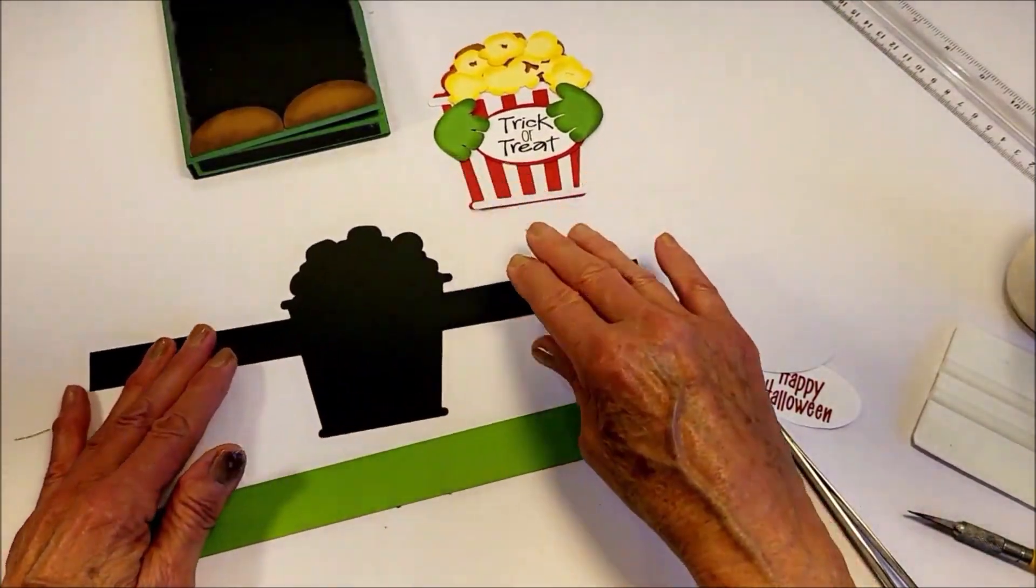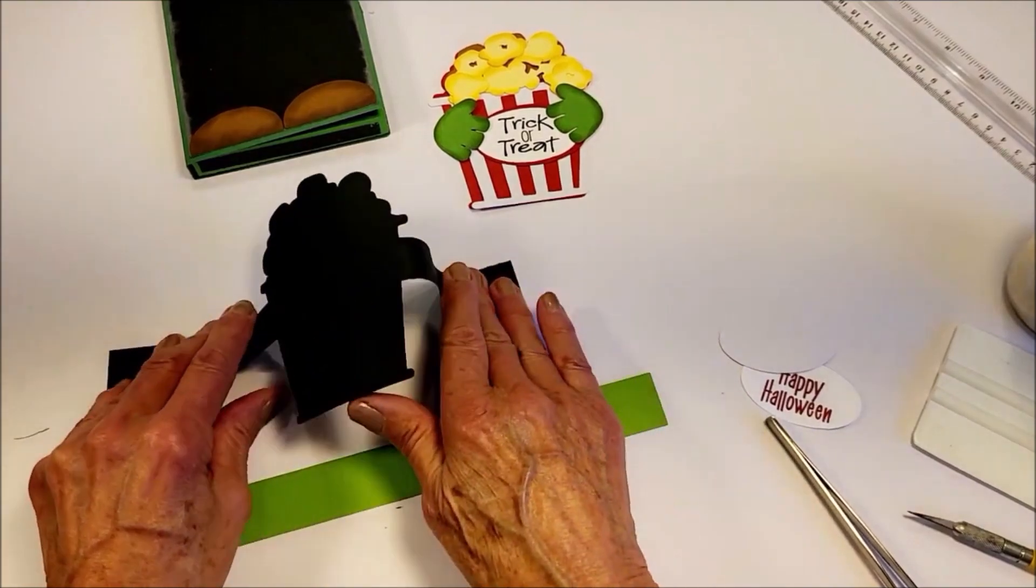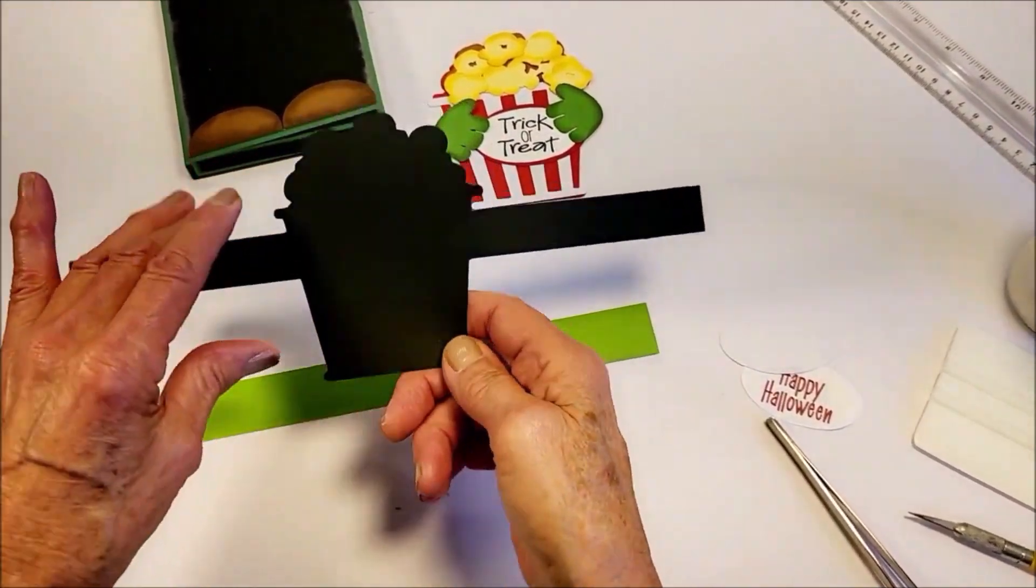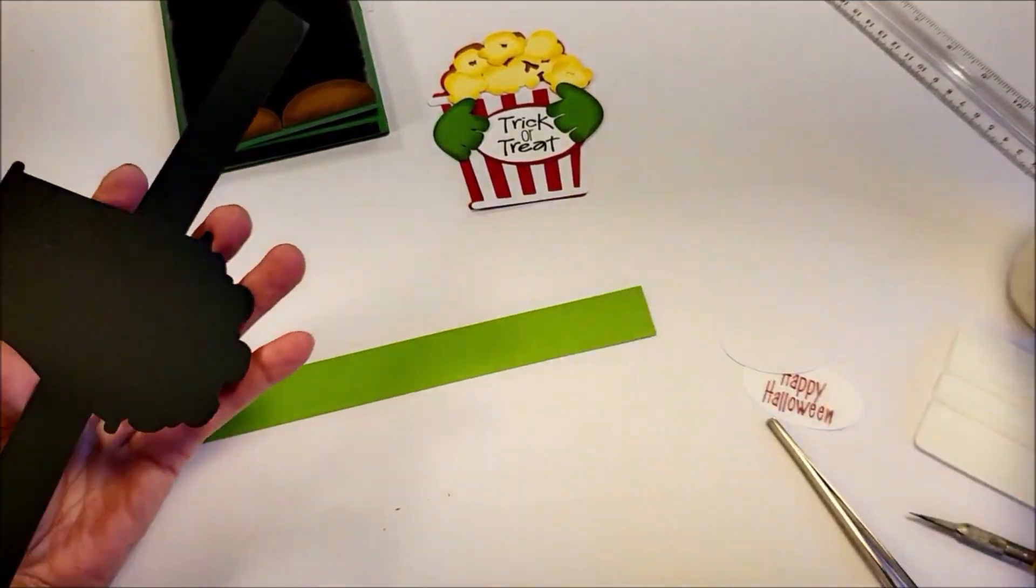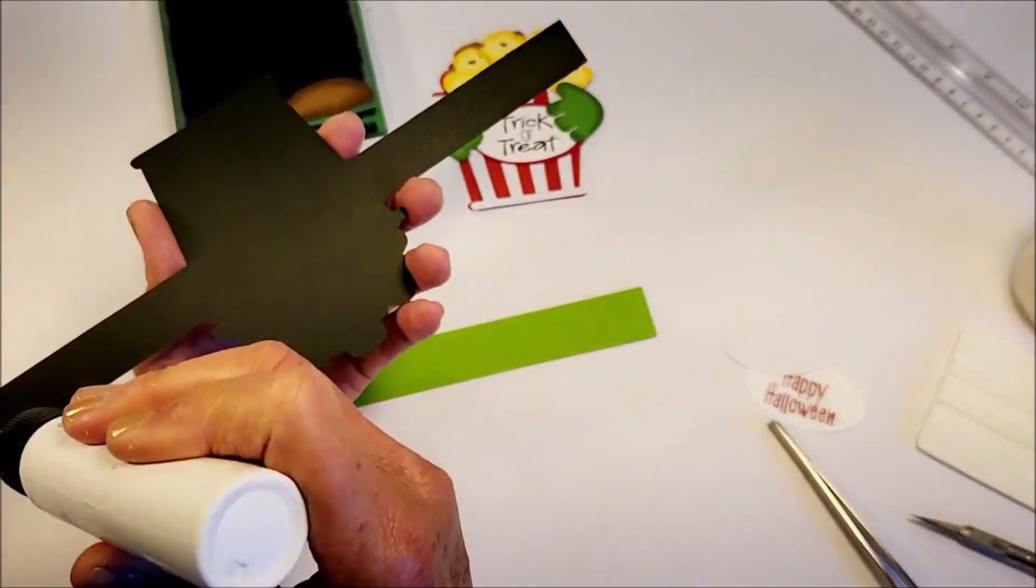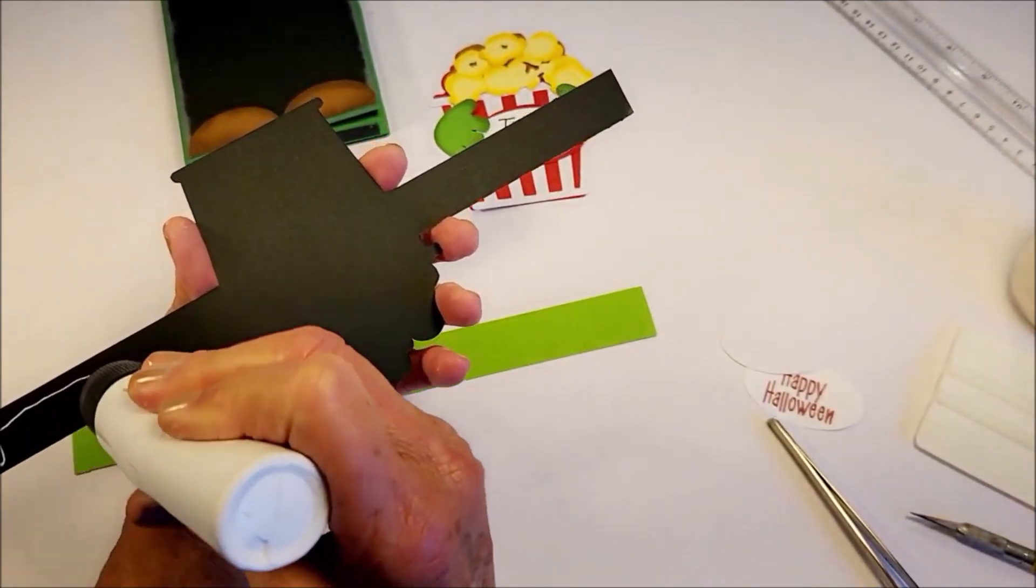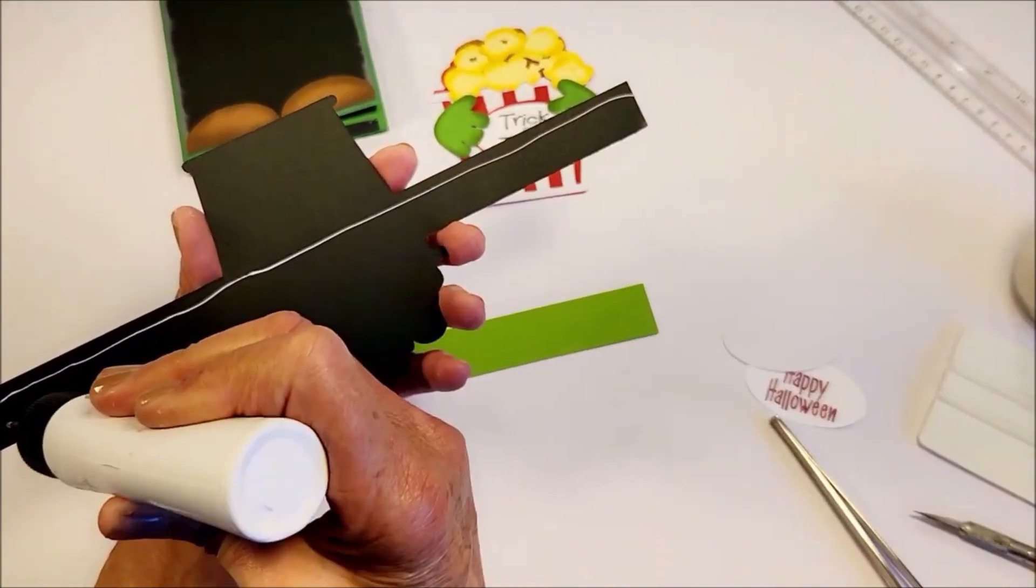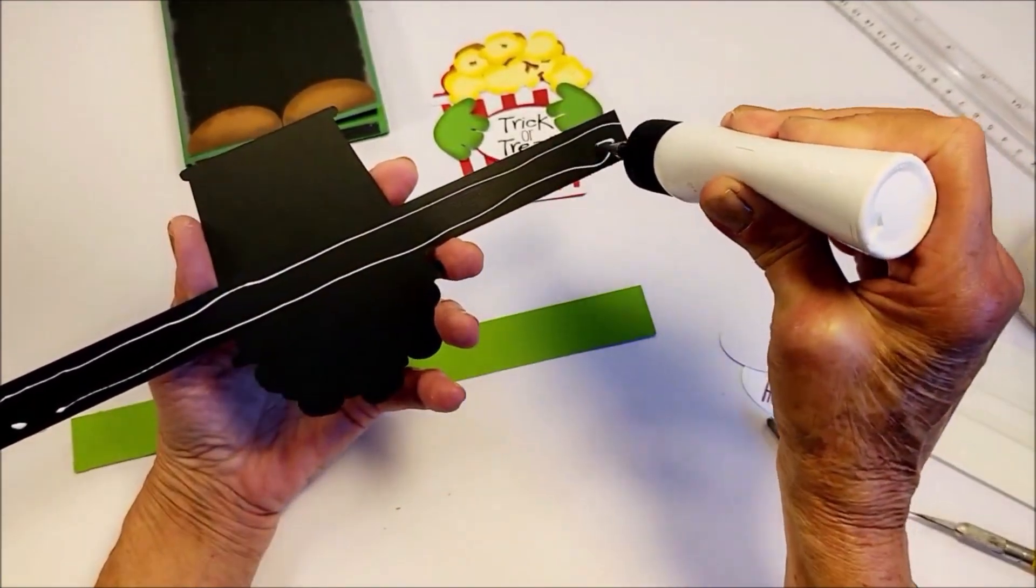So I slide these pieces off. This piece with the popcorn shape is going to go on top of the straight band, but when I do the glue on here I'm just going to go straight across.